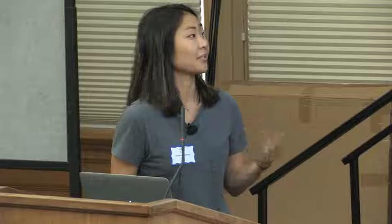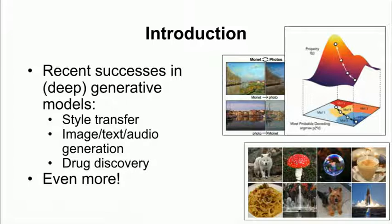The things that we can do with these models include things like style transfer, where we can basically map from one artistic style to another without explicitly training on paired examples. We can generate some really high quality images that basically look real. You can also do this to a certain degree with text and audio as well.